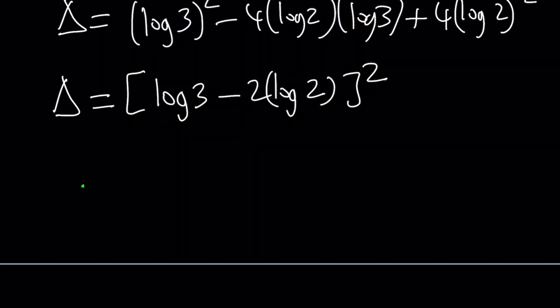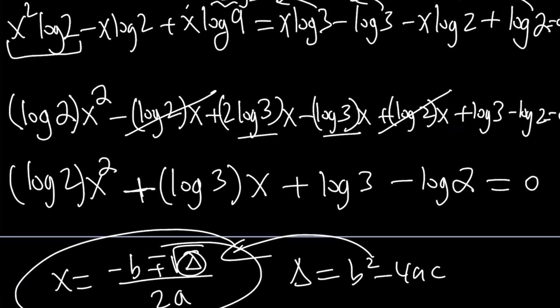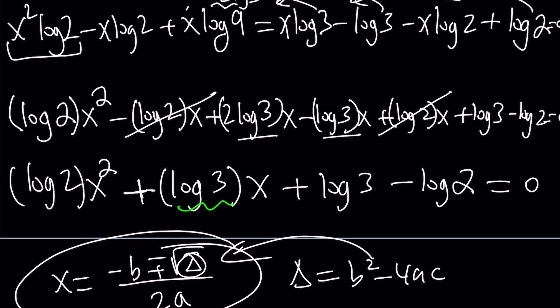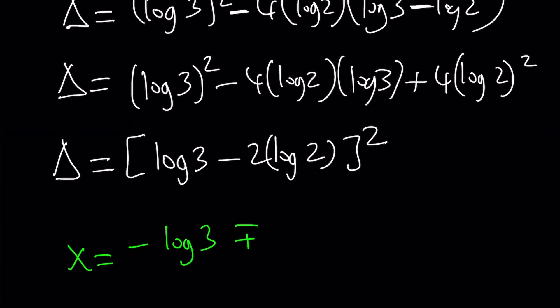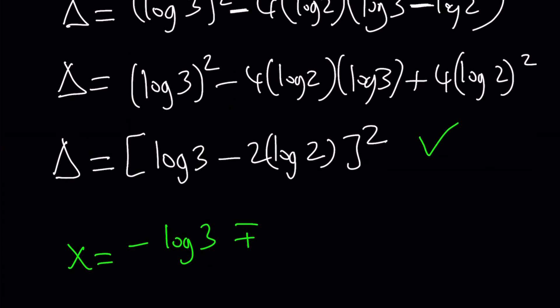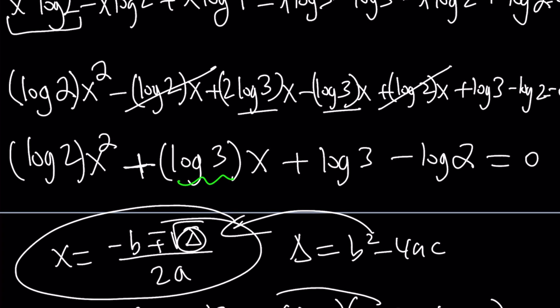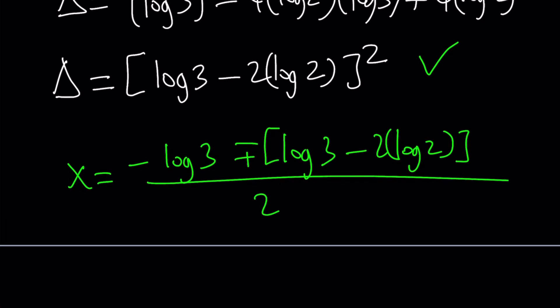What am I going to do? X equals negative b. What was b again? b is the coefficient of x, which is this. So it's going to be negative b, negative log 3, plus minus the square root of delta. So the square root of delta is just going to be this without the square. Log 3 minus 2 log 2. Obviously, we don't need a square root or square anymore divided by 2a. And a is not 1. A is log 2. So it's going to be 2 log 2.